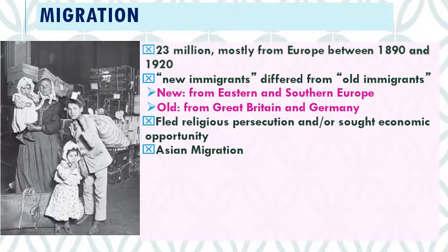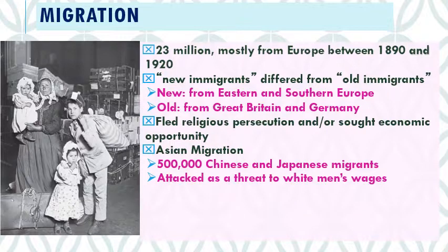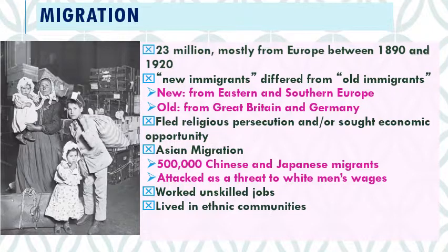One group especially singled out on the West Coast were Asian migrants. In this time period, there were about 500,000 Chinese and Japanese migrants to the United States, seen as a threat — culturally unable to mix and fit in, not welcomed by many Americans. They were seen as a problem partly because they took unskilled, low-paying jobs, which white workers claimed was driving down wages. The more migrants who came, the lower the value of labor.